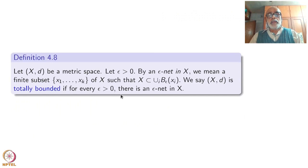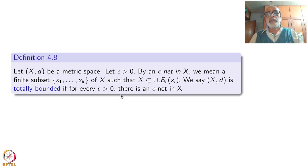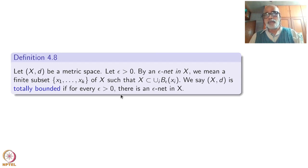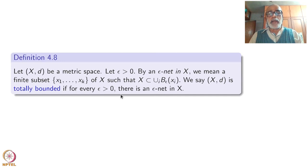Here is a definition. Let X be a metric space. Let epsilon be a positive real number. By an epsilon net in X we mean a finite subset {x₁, ..., xₙ} of X such that the entire space X is contained inside finitely many open balls centered at xᵢ with radius epsilon. We say X is totally bounded if for every epsilon there is an epsilon net.